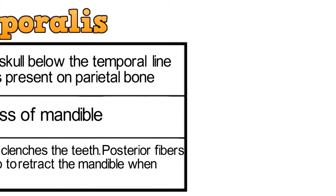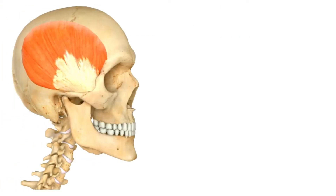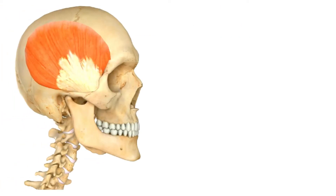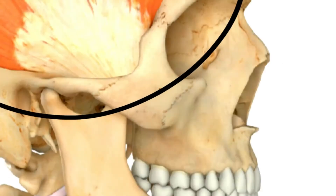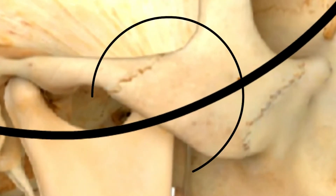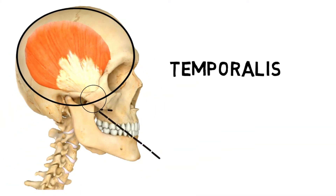Let's have a look. This is the temporalis muscle, and the area behind this arc has the coronoid process of the mandible, where the muscle is inserted.